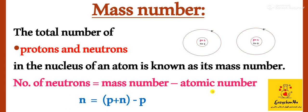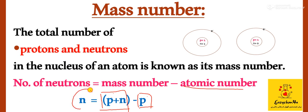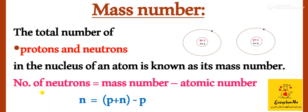So we have the total mass number. Mass number is basically protons plus neutrons, and atomic number is just the number of protons. So if we remove the atomic number from the mass number, we will get the number of neutrons. This is related to objective-type questions.